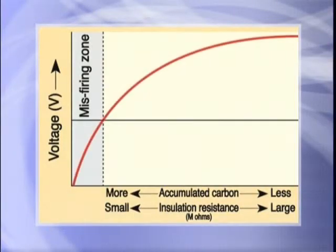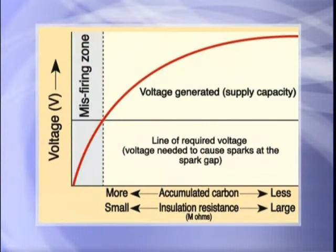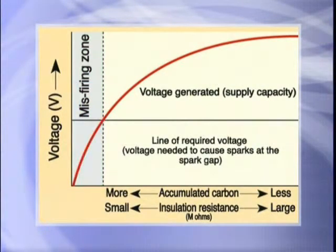In other words, the carbon reduces the spark plug's insulation resistance and can cause the voltage output of the ignition coil to fall below the voltage required to generate a spark, resulting in misfire.